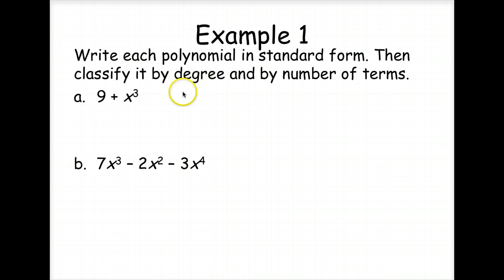So we're to write each polynomial in standard form, which means in descending order by the exponents, and then classify it by degree and by number of terms. So is this one in standard form? Nope. We have to put the x to the third power first, plus 9. So the degree is 3, so it's cubic, and there are two terms, so it's a binomial. So we have a cubic binomial.